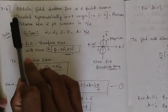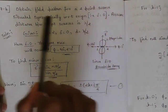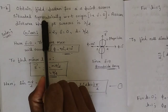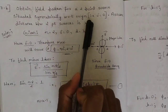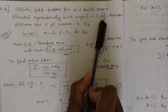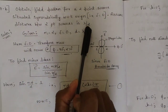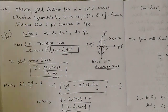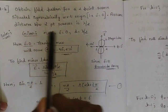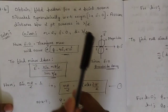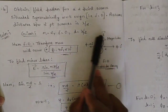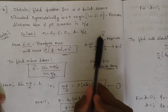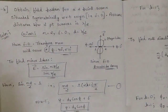The question is: obtain the field pattern for a two-point source situated symmetrically with respect to the origin. The condition 'situated symmetrically with respect to origin' indicates directly that delta (δ) equals zero. The distance between two point sources is lambda by two. So the given parameters are: n = 2, δ = 0, d = λ/2. Since δ = 0, the array pattern generated is a broadside array, where the major lobes are generated horizontal to the array.